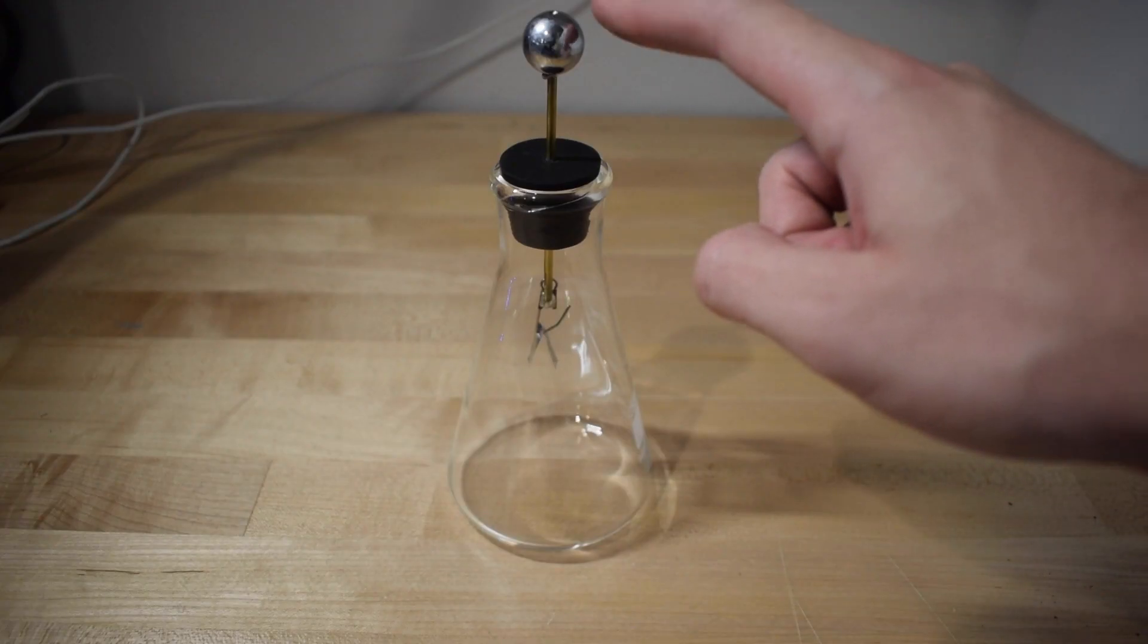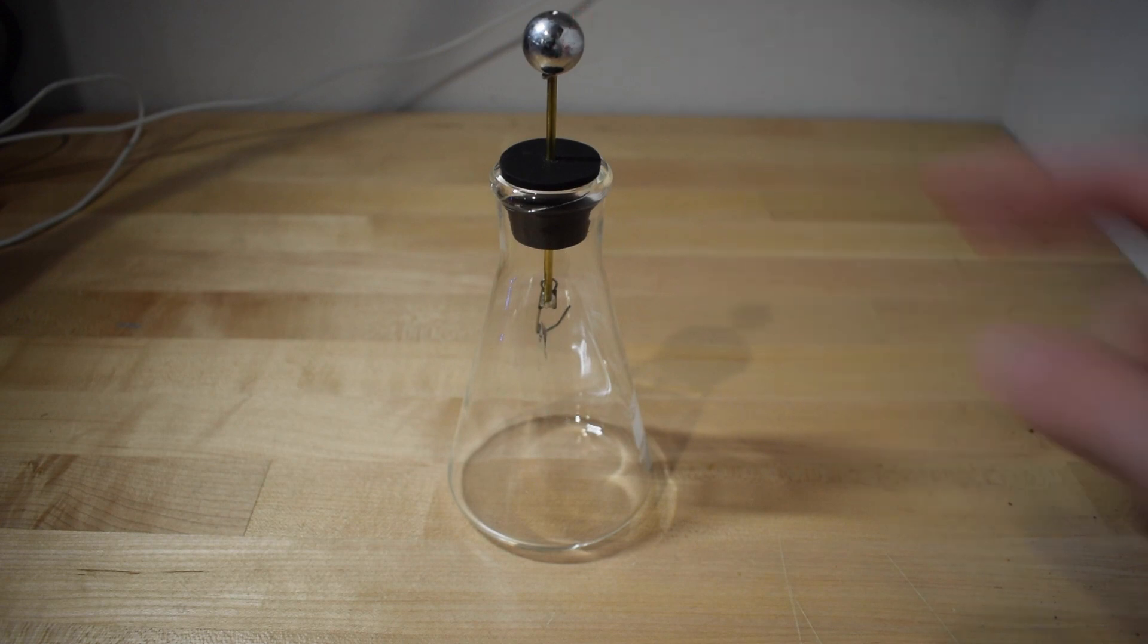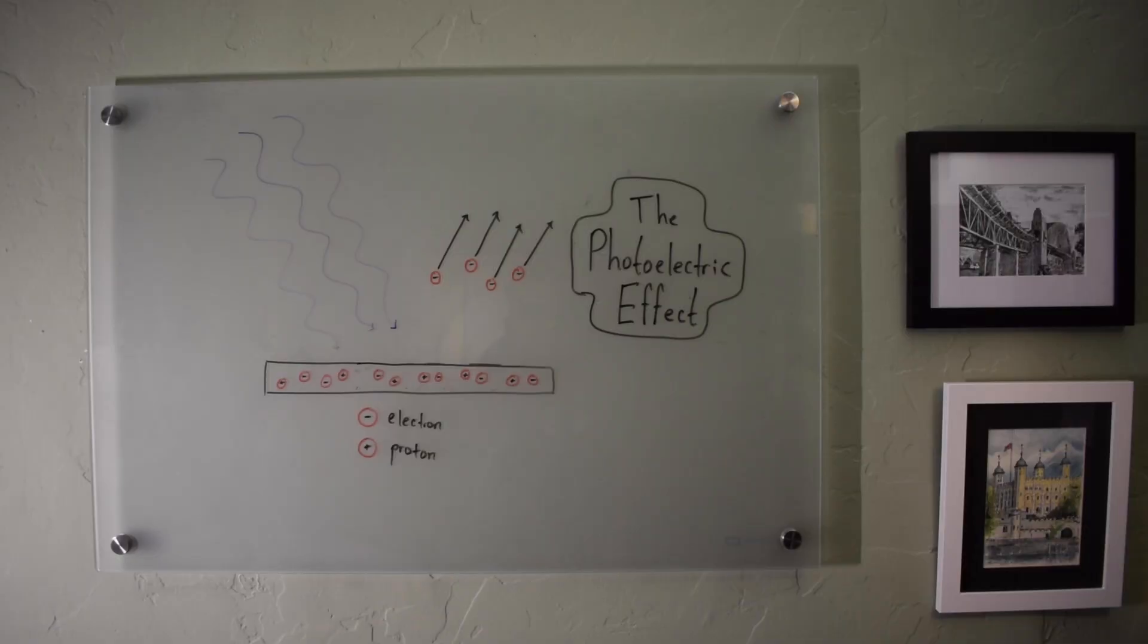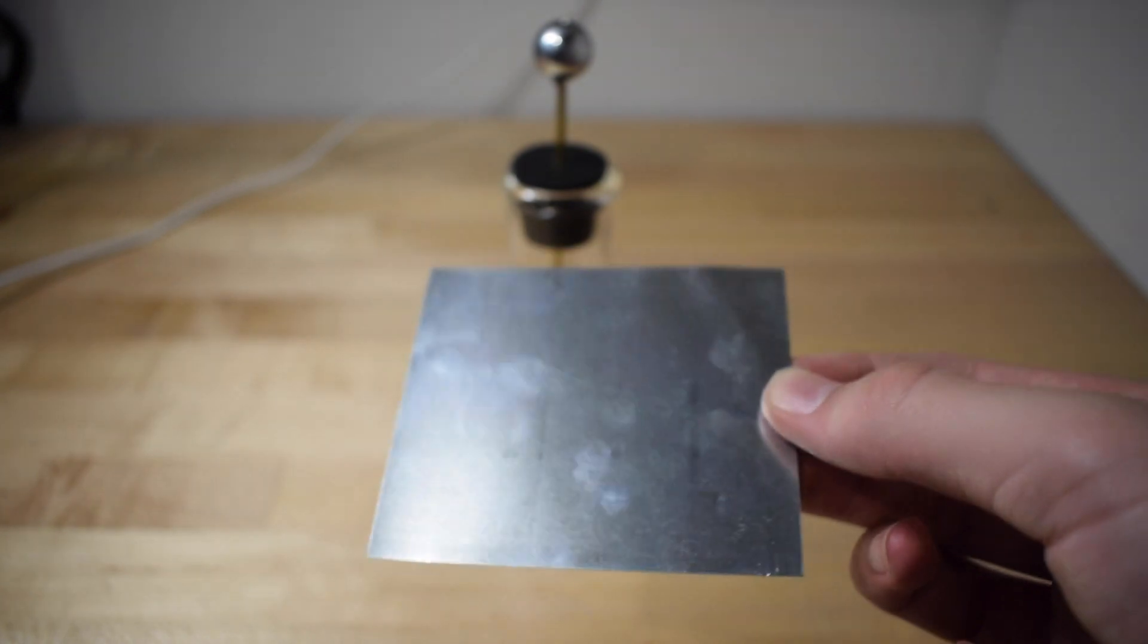If I then touch the electrometer, the electrons transfer to my hand and the pieces of foil come back together. Now that we know how the electrometer works, let's see if we can witness the photoelectric effect by discharging the electrometer with only light. We can use this metal surface as our target.